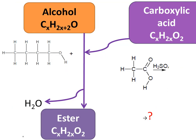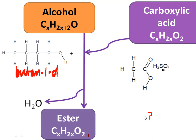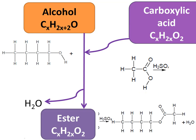Let's take an example. Here we have an alcohol and a carboxylic acid. We add sulfuric acid as the catalyst — the dehydrating agent. The name of this alcohol is butan-1-ol and the name of the carboxylic acid is ethanoic acid. Butan-1-ol reacts with ethanoic acid in the presence of sulfuric acid. Water is formed as one of the products, and then it forms an ester.